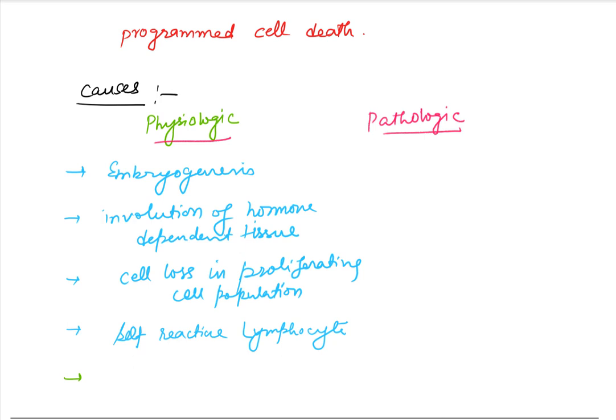Certain cells have a role in the inflammatory response, and when their response is over, they need to be eliminated. So removal of inflammatory cells after their work is over is another physiologic role of apoptosis.